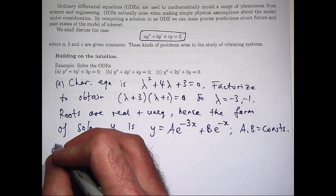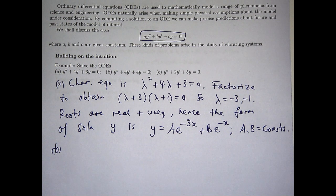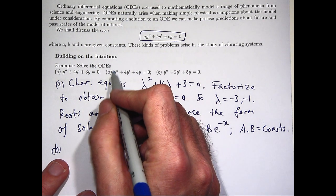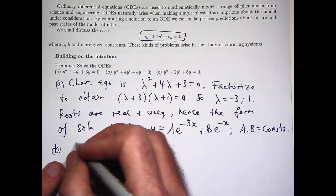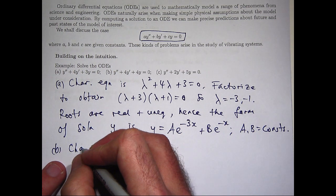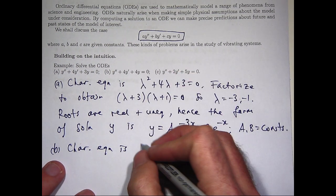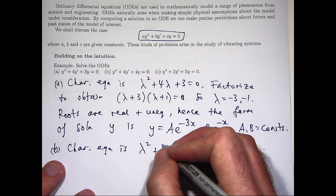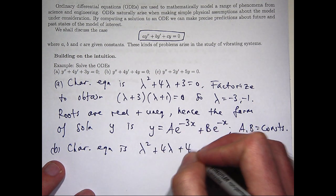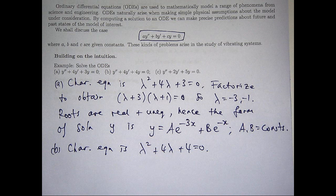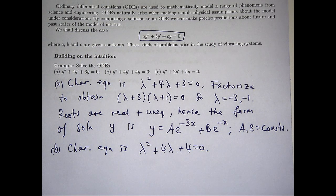Now for part B, we go down a similar route. We form the characteristic equation and look at the roots. But for this particular problem, something slightly different happens. So let's look at the coefficients 1, positive 4 and 4. Let's write down the characteristic equation. So it's going to be lambda squared plus 4 lambda plus 4 equals 0.